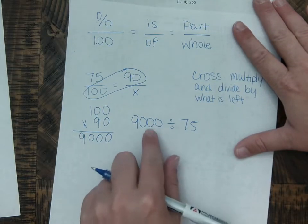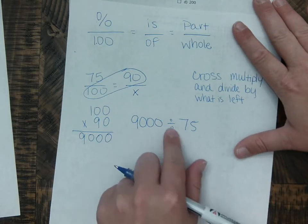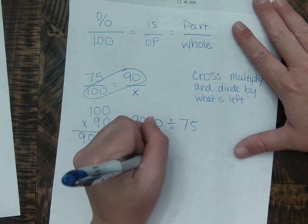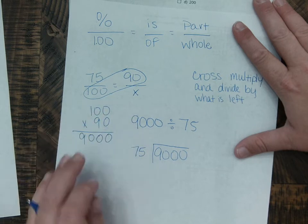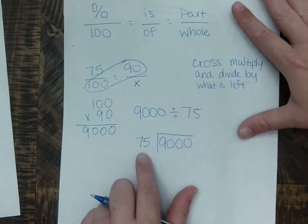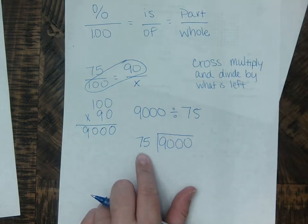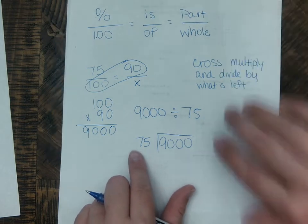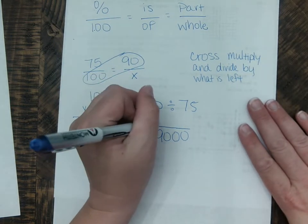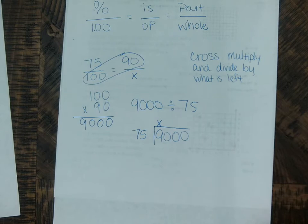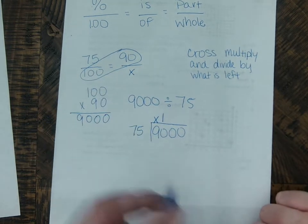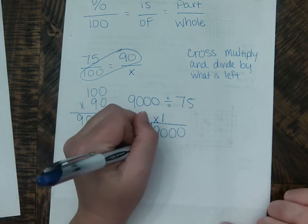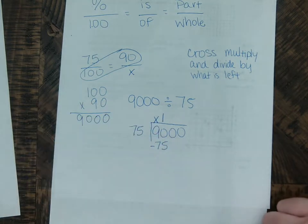Now, we know that the first number before the division sign goes in the house. So we get 9,000 divided by 75. So now I have to figure out, 75 can go into 9, 0 times. I put an X so I don't get confused. 75 can go into 90 one time. 1 times 75 is 75. So now I subtract.